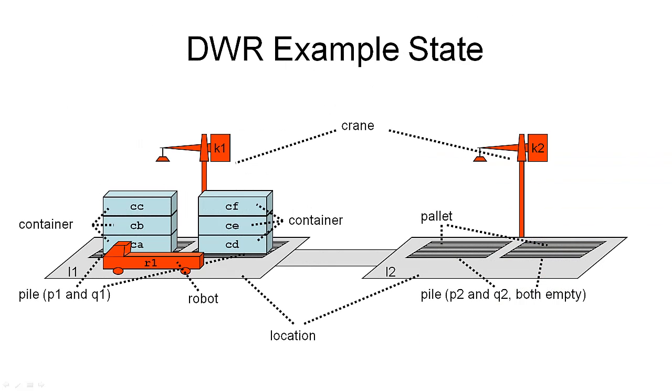Now, let's look at the state of the world in the DocWorker robot example. What we have in each state are locations. In this example, there are two locations, L1 and L2. These locations are connected by paths along which the robot, for example, can move. So these two locations are adjacent because they are connected by a path.